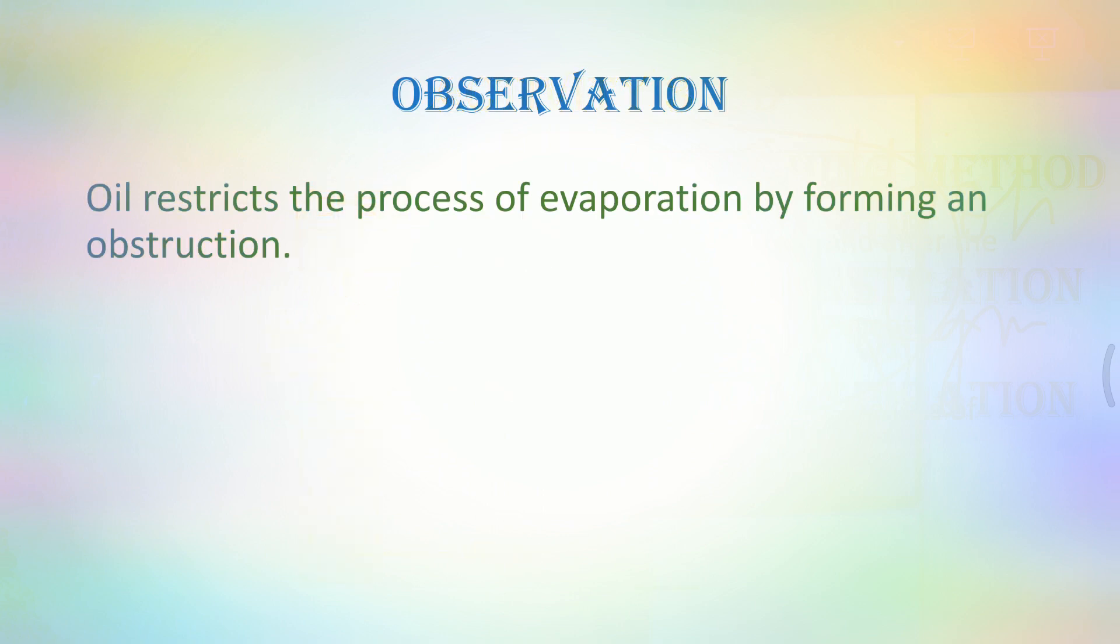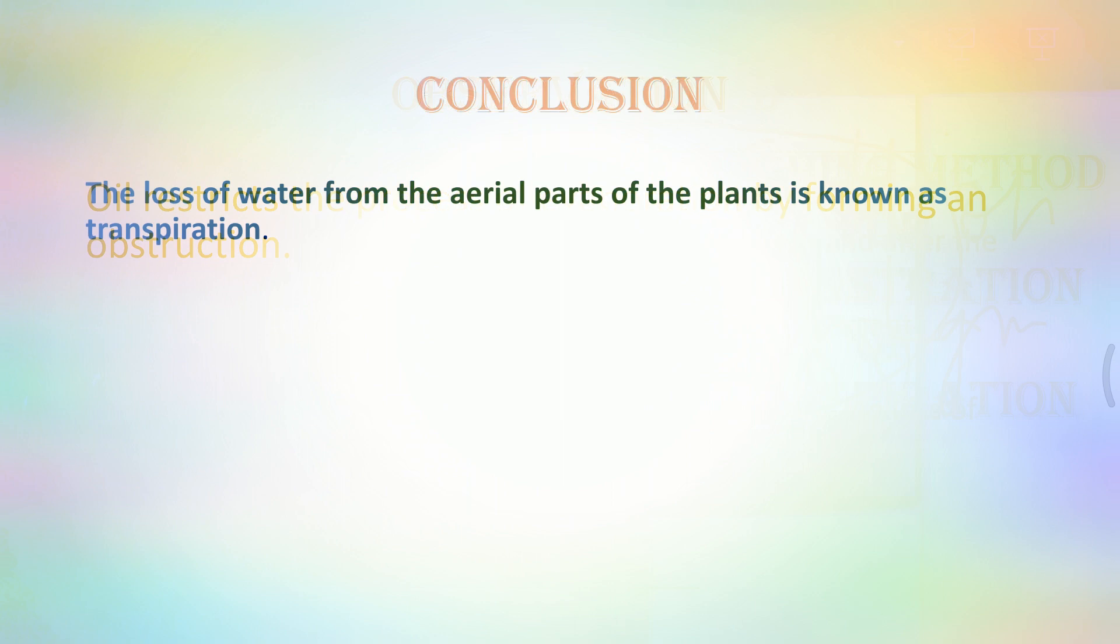And what do we observe? We have observed that oil is restricted in the process of evaporation which may show faulty reading. So with the use of oil we are getting accurate reading of the rate of transpiration. And finally the result is the same that plants they lose water by the process of transpiration through the aerial parts of the plant, that is the aerial parts of the leaf, that is the stomatal pore which is created by the guard cells, turgid guard cells. Thank you.